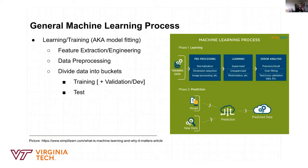We sometimes also split the training data into train and validation, because some machine learning models have tuning knobs — technically called hyperparameters. For example, in a decision tree, the depth of the tree is a hyperparameter. We use the validation set to decide which depth works best for the training data. But this is beyond the scope here — just an idea of what we do.